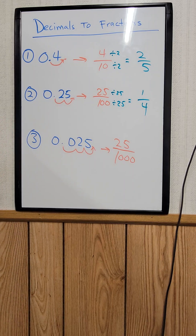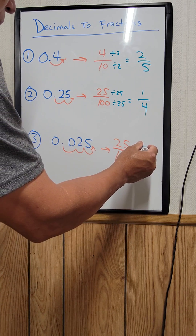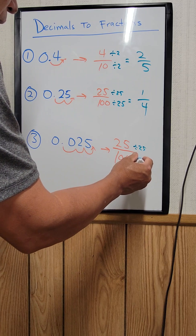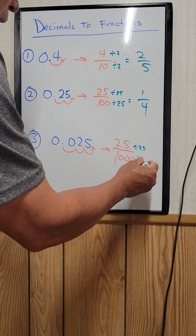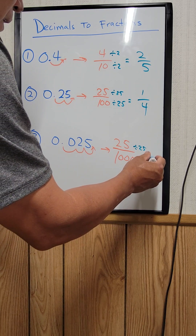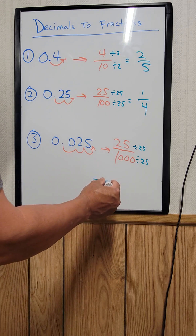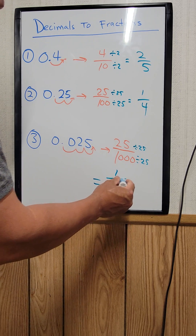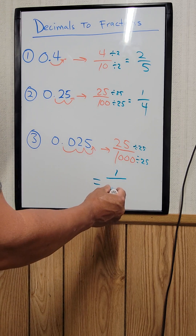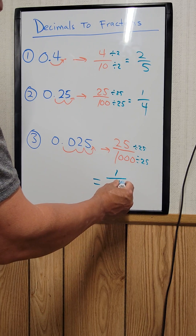Okay, over 1,000. We divide the top and the bottom by 25, and it becomes 1 over 40.